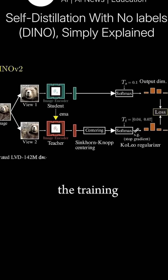They also scaled the training data set to 142 million images and increased the trained batch to 3,000.